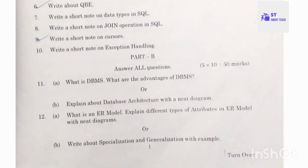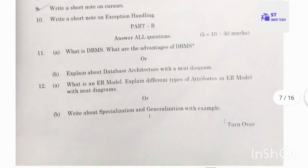Part B: each unit has two questions and you must answer one, each carrying ten marks — five into ten equals 50 marks. Part A is 25 marks, Part B is 50 marks, total 75 marks. Question 11A: what is DBMS and what are the advantages of DBMS? 11B: explain about database architecture with a neat diagram.